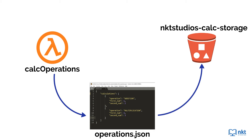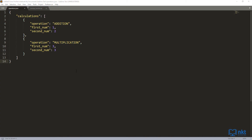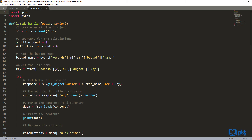Remember, your bucket name cannot contain spaces or capital letters. As soon as the upload happens, S3 will give out a put event, which will trigger our Lambda function, which will then process the contents of the operations.json file. The JSON file, as well as the Lambda function used in this demonstration, are linked in the description below. Now let's log into the AWS console.